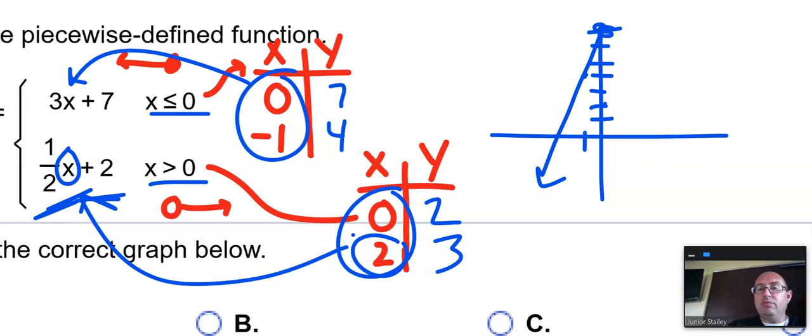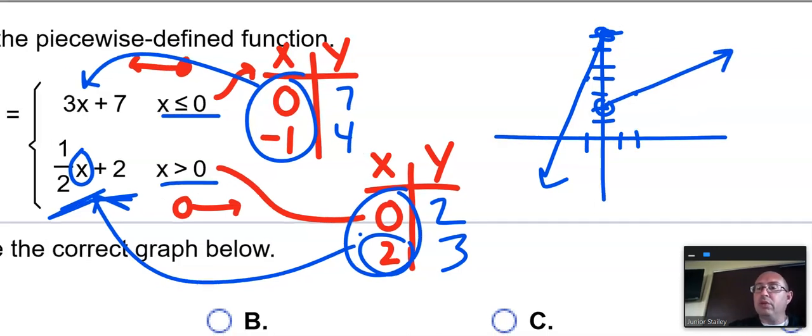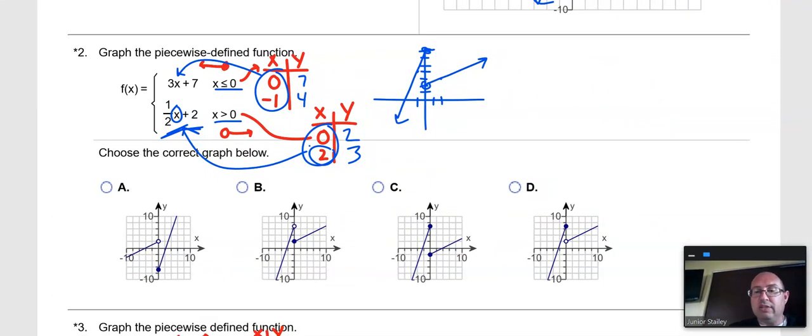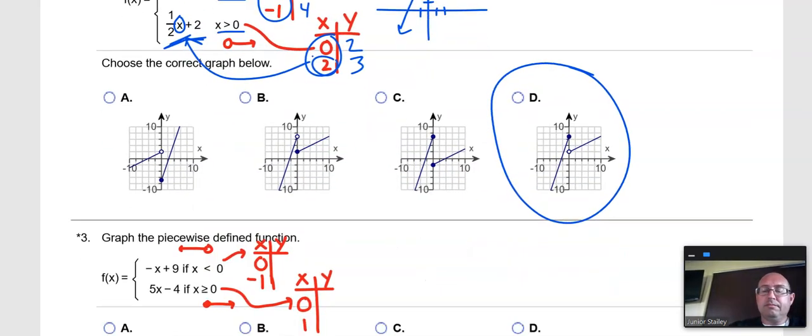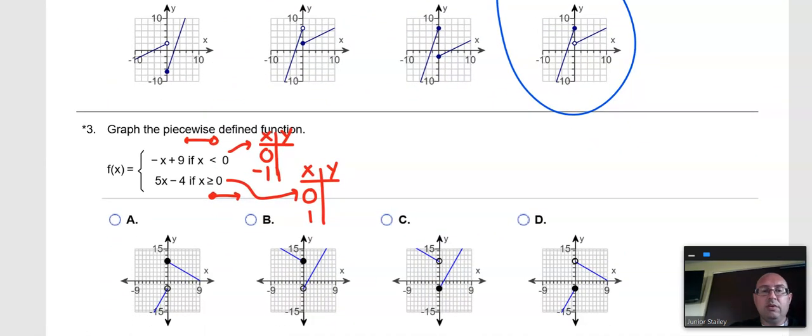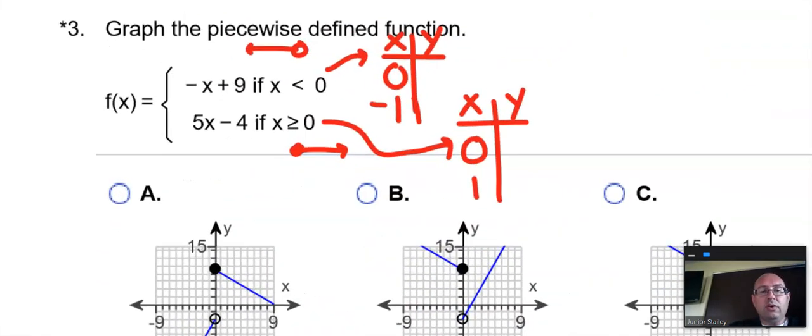And then 0, 2, that has to be an open circle. And then 2, 3, 1, 2, and then up 3 puts me here. And so that's what I got to have. That's the picture I'm looking for. Let's see which one matches. I'm thinking that letter D is the one we want. Letter D. Yep, that one matches.